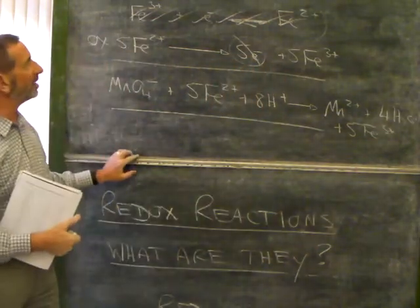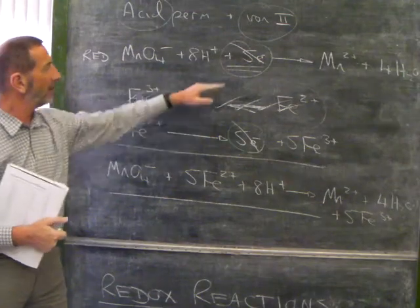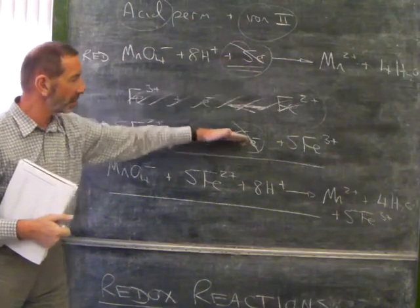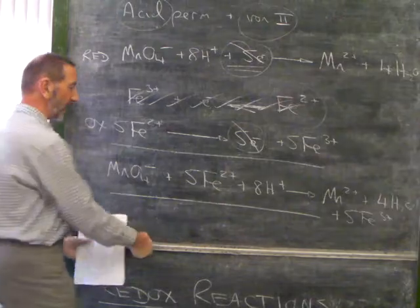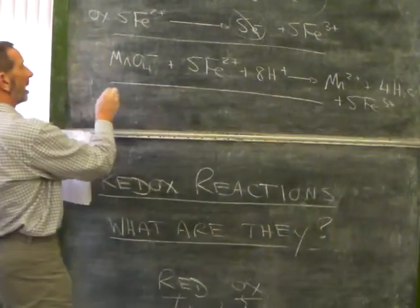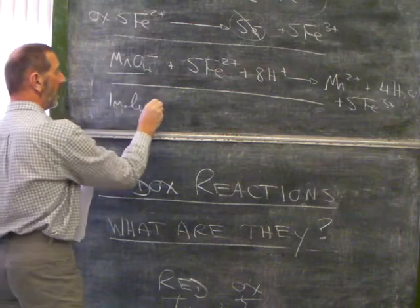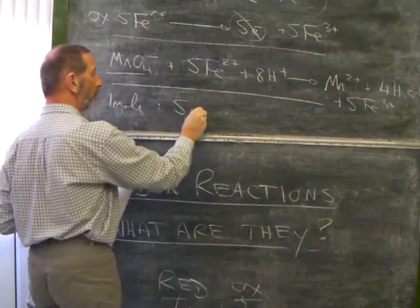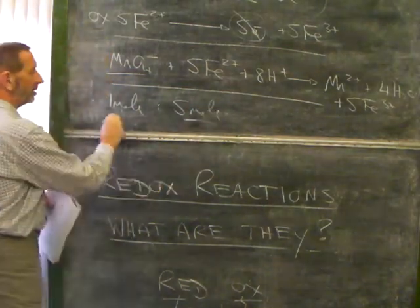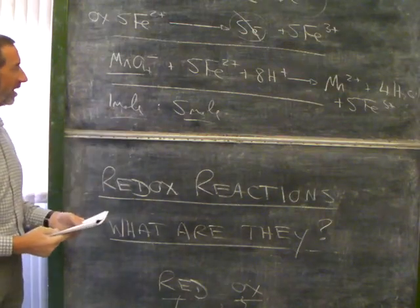You identify which one is gaining, which one is losing, make sure the electrons balance, cancel the electrons, add them together, and finally appreciate that this is telling us that every time one mole of permanganate reacts, it reacts with 5 moles of iron-2. The ratio is 1 to 5.